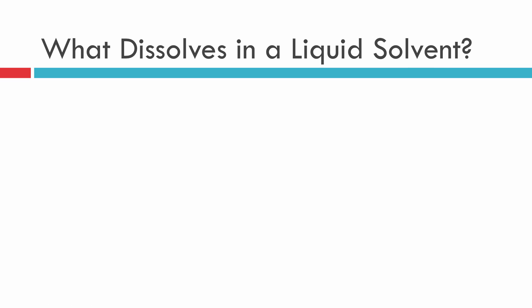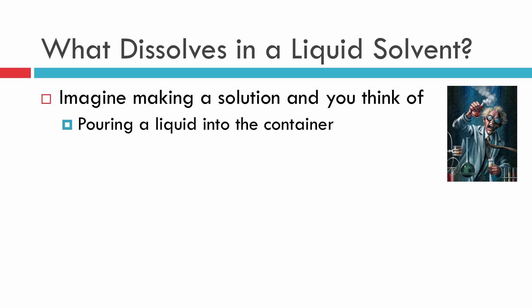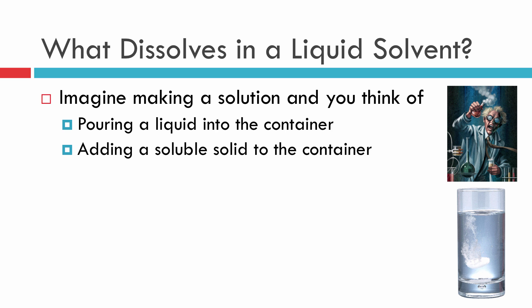First, we have to ask ourselves what we mean when we say something dissolves in a liquid solvent. What do we mean when we say solution? Most people think about mixing two liquids together, like a mad scientist making some crazy concoction. But in the lab, you're probably used to adding a soluble solid to a container. And for this reason, we've put to memory some solubility rules to predict what happens when we put something into water as our solvent.